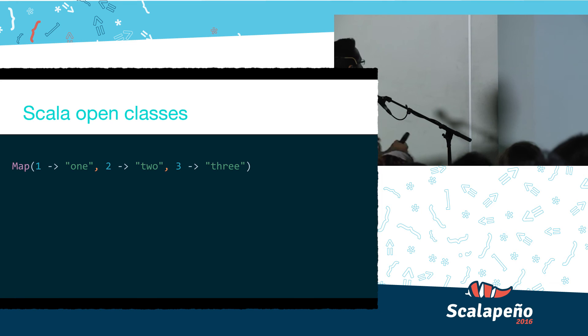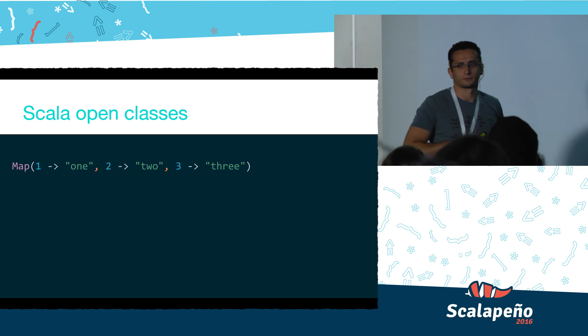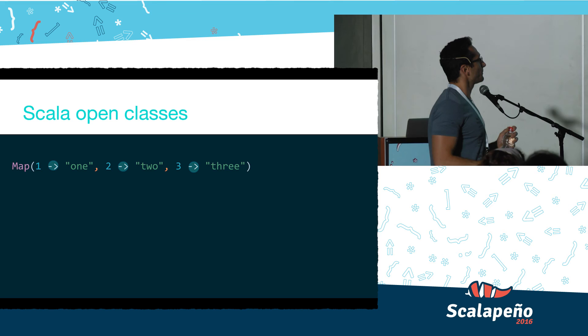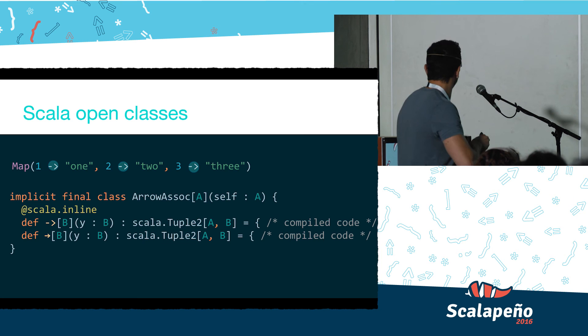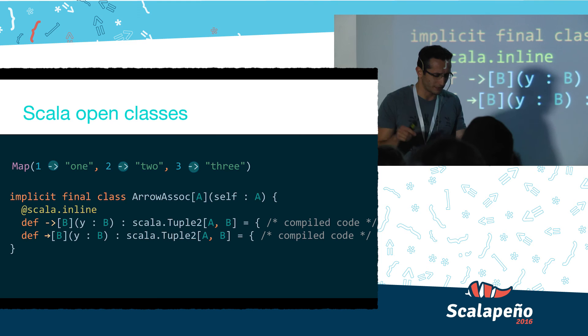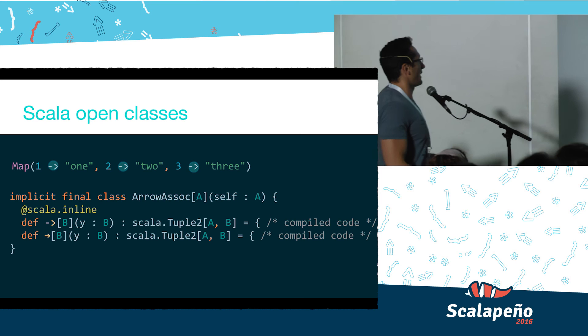Scala open classes — how many of you use the `->` arrow operator in your code? How many of you know how it works? Basically this is an ability of Scala where there's an implicit class called `ArrowAssoc`, and it defines for any object a new method, `->`. Using this implicit function, we can take an input `self: A` and return a tuple of `(A, B)`. We have both versions — one that looks pretty and one that looks ugly.